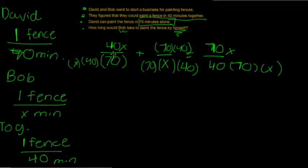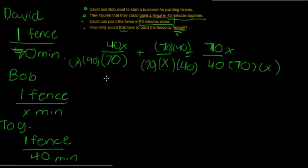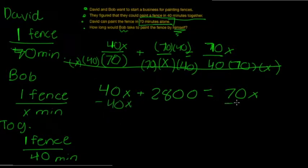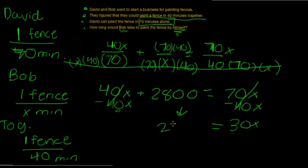Now that we have a common denominator, we just need to look at the numerator. So, 40X plus 2800 equals 70X. Notice we're ignoring the denominator because it will be easier to solve. Let's subtract 40X from both sides. This is 0 and this is 30X. It equals 2800.